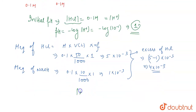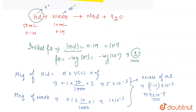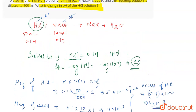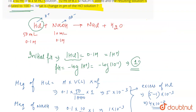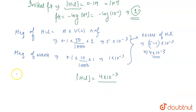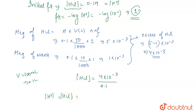Therefore, the concentration of HCl = milliequivalents of HCl divided by the volume. The excess milliequivalents are 4 × 10⁻³. As per the question, the solution is diluted to 100 ml, which is 0.1 liters. So the concentration of HCl = 4 × 10⁻³ / 0.1 = 4 × 10⁻² M. This is also equal to the concentration of H⁺.